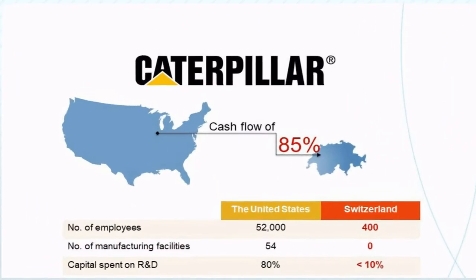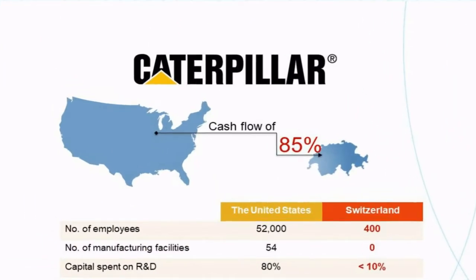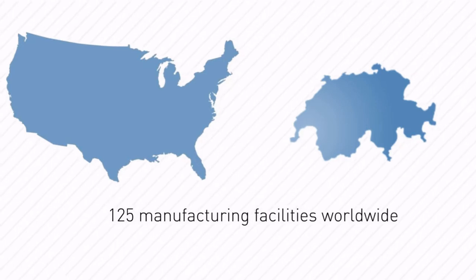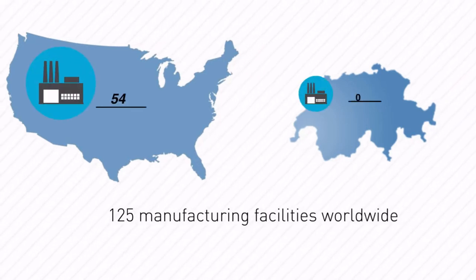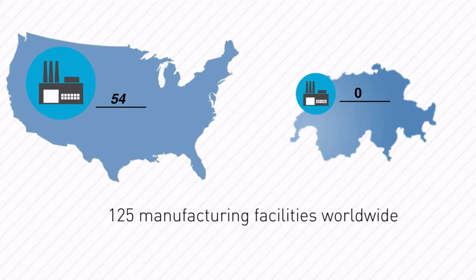Take a look at Caterpillar, which shifted 85% of its US-based income to Switzerland, keeping its core operations at home while artificially moving the spare parts business to Geneva. Of its over 118,000 employees worldwide, nearly half work in the United States, while less than half of 1% work in Switzerland. Of its 125 manufacturing facilities, 54 are in the United States, with none in Switzerland.